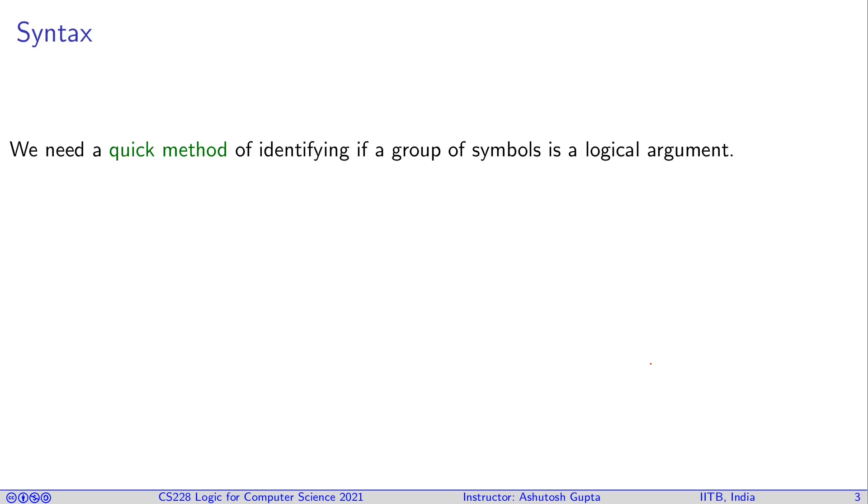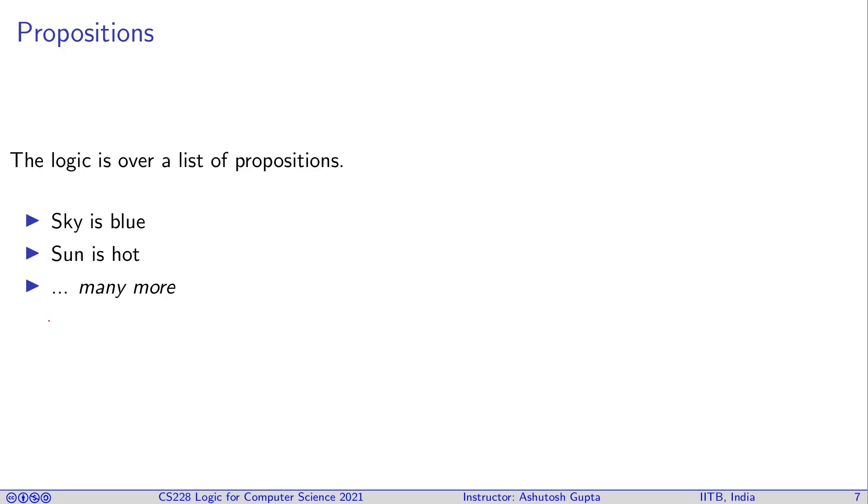We need a quick method of identifying if a group of symbols is a logical argument. If I give you a sequence of words or symbols, there should be some way of saying yes, this passes as correct syntax. Maybe it means nothing or maybe it means absurd, but I can understand what is being tried to be said. You usually define a syntax. For example, in English you have something called grammar, and if something does not fit the grammar then you say it is not English. So let's define the similar grammar or syntax for propositional logic.